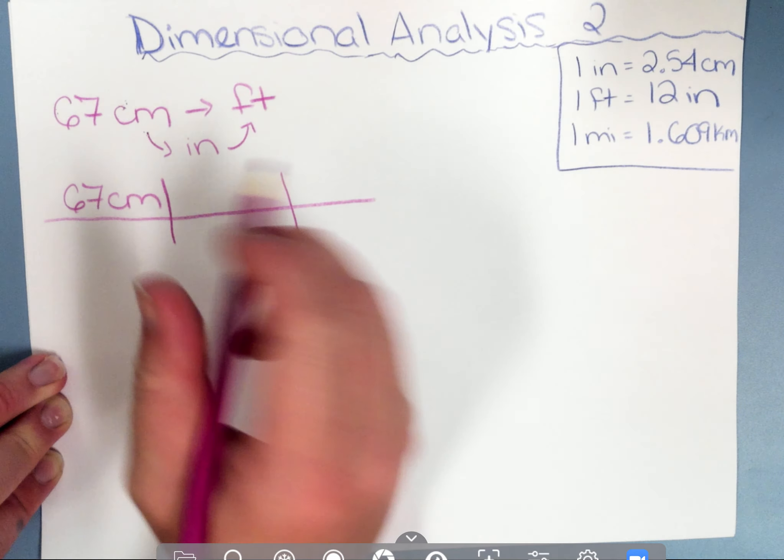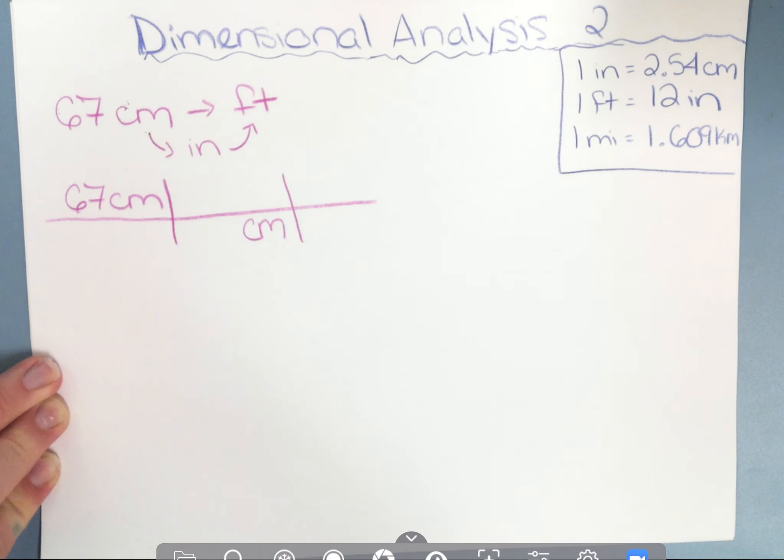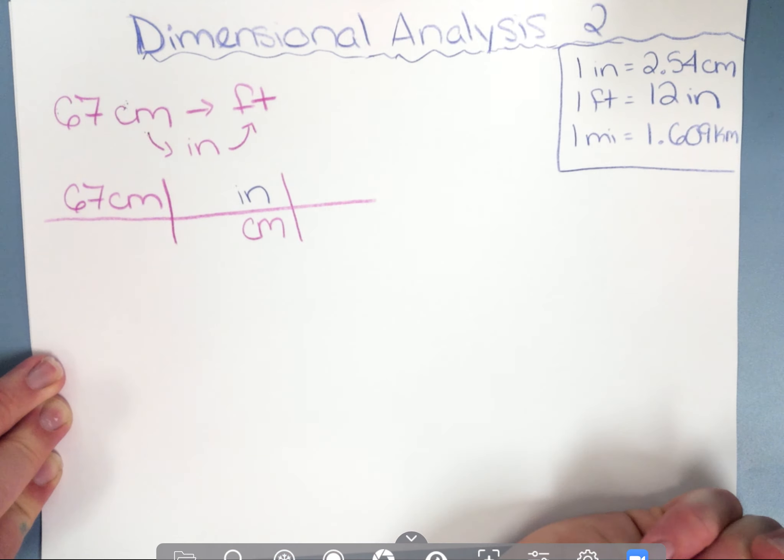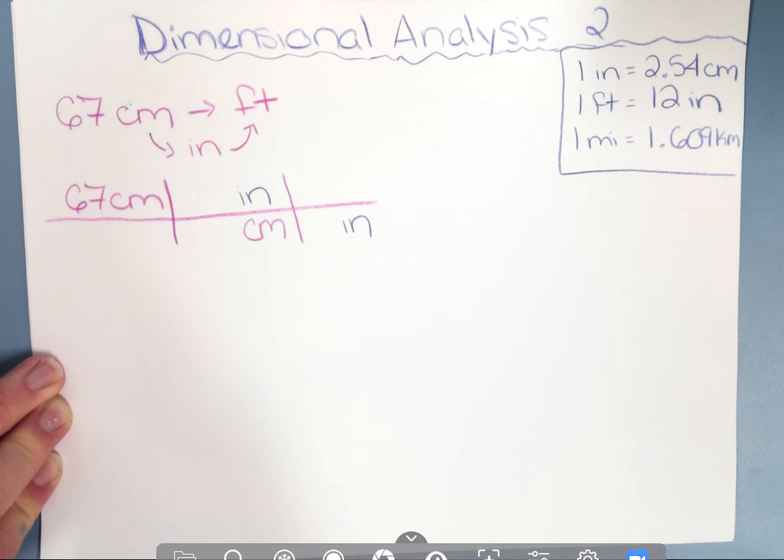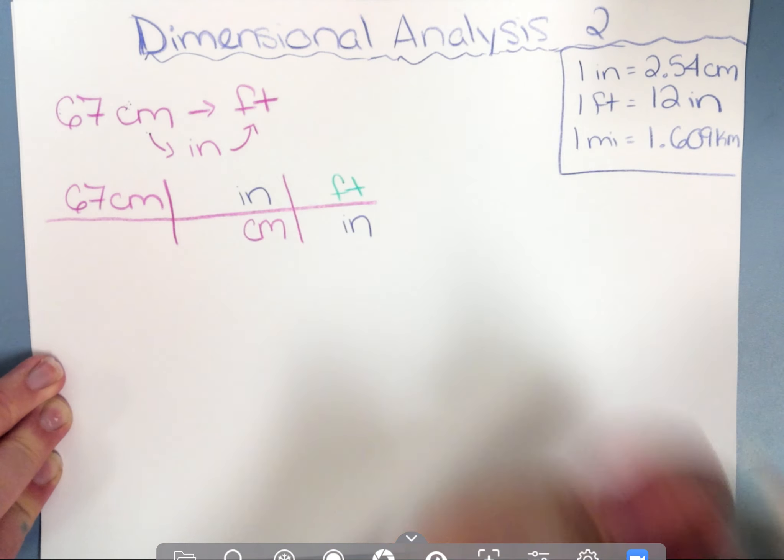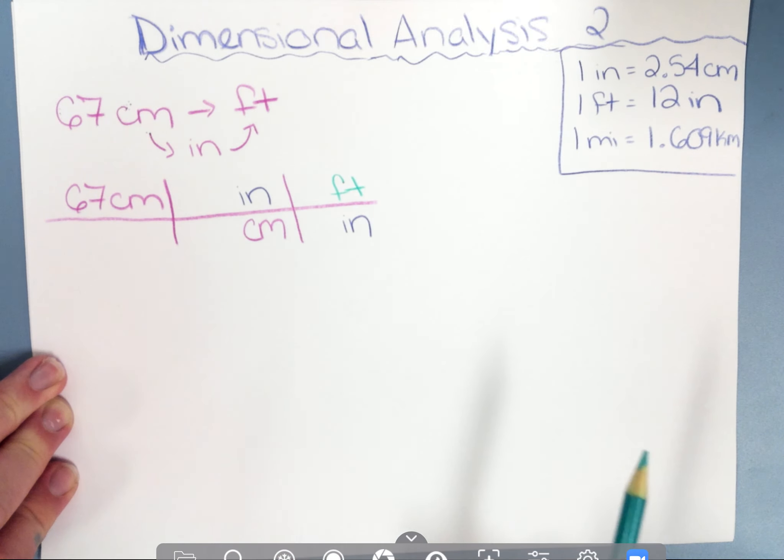If I have centimeters on top, I'm going to put centimeters on the bottom, and I'm going from centimeters to inches. Now if I have inches on the top, inches has to go to the bottom, and I'm going from inches to feet. Oftentimes when we're doing questions like this, it's easier to plug in the units and then fill in the conversion factors.